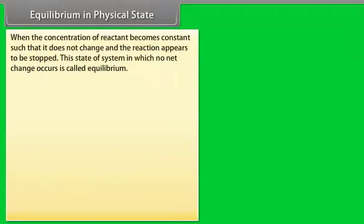Equilibrium in Physical State: When the concentration of a reactant becomes constant such that it does not change and the reaction appears to have stopped, the state of the system in which no net change occurs is called equilibrium.